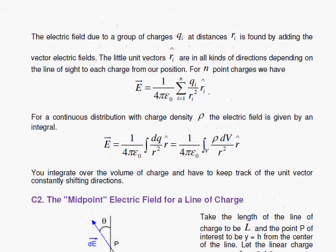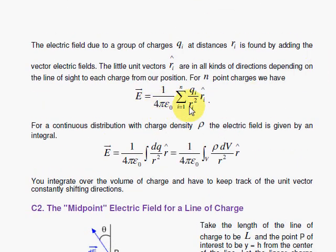When you have more than one charge, you sum up the effects of the little charges, and each of these has their own little unit vector, which is in a different direction depending on where the charge is from your line of view when you look at it.